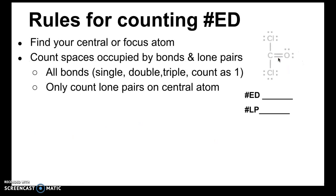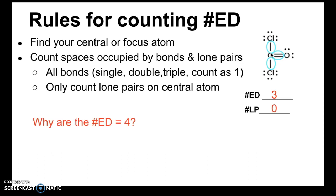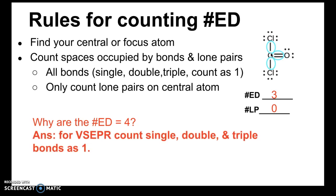Let's look at another example: COCl2. We find our central atom — carbon — and count the spaces occupied by bonds and lone pairs. We get three electron domains, zero lone pairs. You may ask why there aren't four electron domains. Remember, for VSEPR we count single, double, and triple bonds as one. So even though there is a double bond here, it still occupies the same space as a single or triple bond would, so we count it as one electron domain.